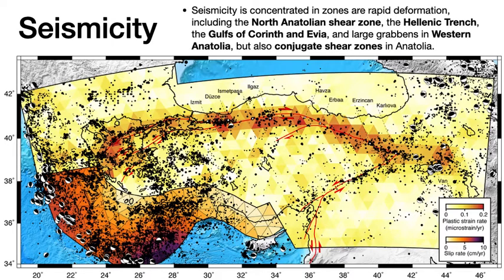The distribution of seismicity is concentrated in zones of rapid deformation, including the North Anatolian shear zone, the Hellenic Trench, the Gulf of Corinth and Evia, large grabens in western Anatolia, and conjugate shear zones in Anatolia. This includes the region of the 2020 magnitude 7 Samos earthquake offshore the Menderes Graben, which caused a large tsunami in western Turkey.